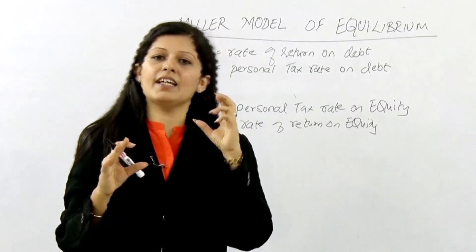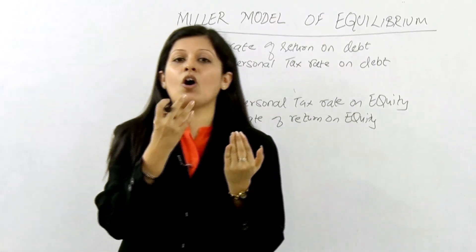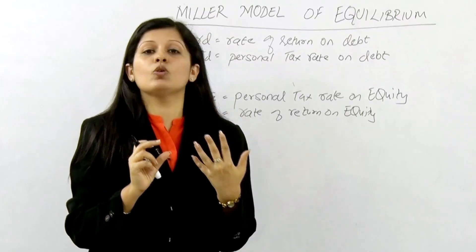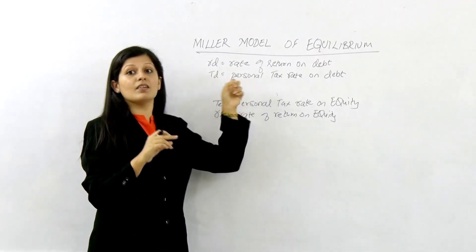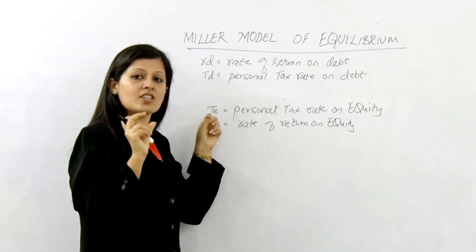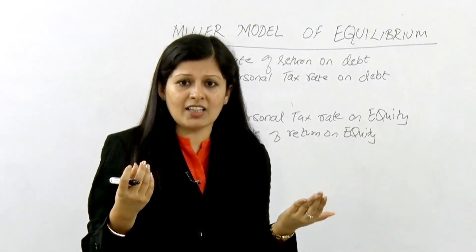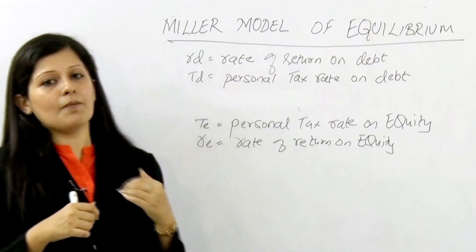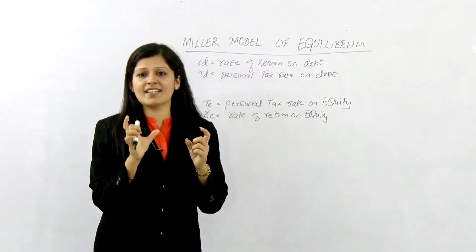We are operating in the world of corporate and personal taxes. Companies want to issue debt because they can save tax, as interest on debt is a tax-deductible expense. Companies are motivated to raise debt. But generally in the economy, the personal tax rate on debt income is high — interest is taxed at a higher rate. The personal tax rate on equity income is very low or even zero in some countries, as capital gains tax may not be charged. So investors are motivated to buy equity products. Companies want to raise debt, but who will buy debt? Tax-exempt investors will.